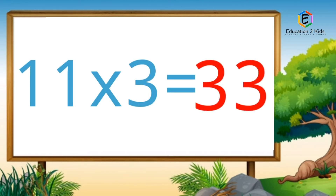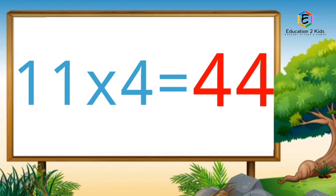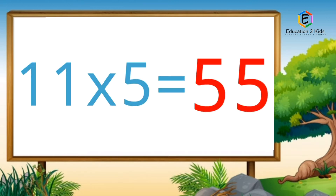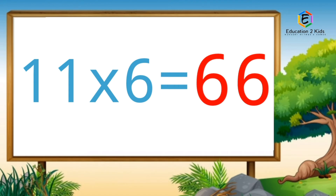Eleven threes are thirty-three. Eleven fours are forty-four. Eleven fives are fifty-five. Eleven sixes are sixty-six.